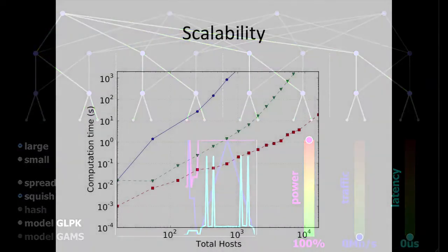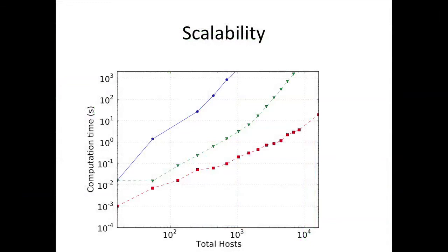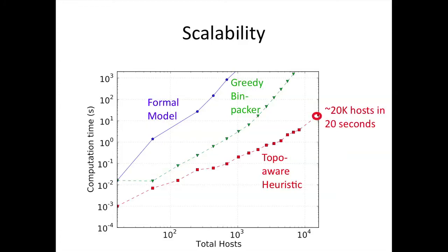But we're still missing one thing. To make this idea real, it has to scale to the largest data centers. This graph compares the scalability of the three algorithms. We started with a formal model, moved to a greedy algorithm, and finally arrived at the topology-aware heuristic, which uses knowledge of the structure of typical data center networks. The red circle corresponds to a data center with 20,000 nodes solved in well under a minute.